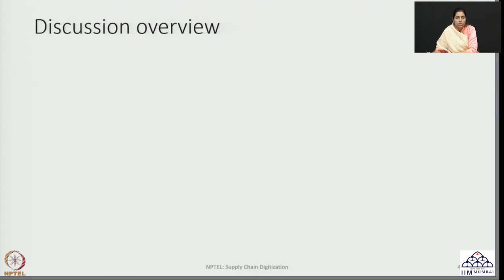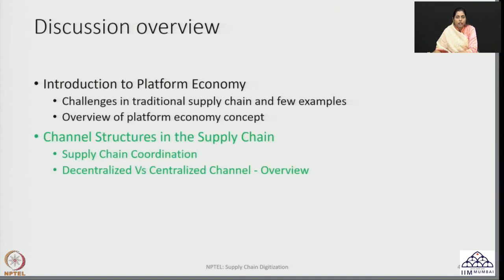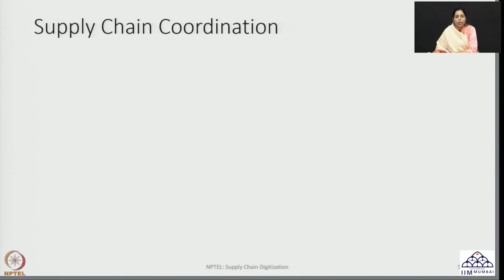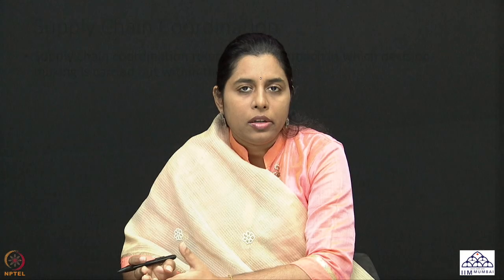Our discussion overview for this session is on channel structures in the supply chain, which can enable supply chain coordination or provide the context in which it has to be studied. Supply chain coordination refers to an approach in which decision making is carried out within the supply chain. A supply chain is a vast network of a variety of players dealing with each other in order to transport a product to end customers across various markets, and many times these supply chain networks interact across industries.